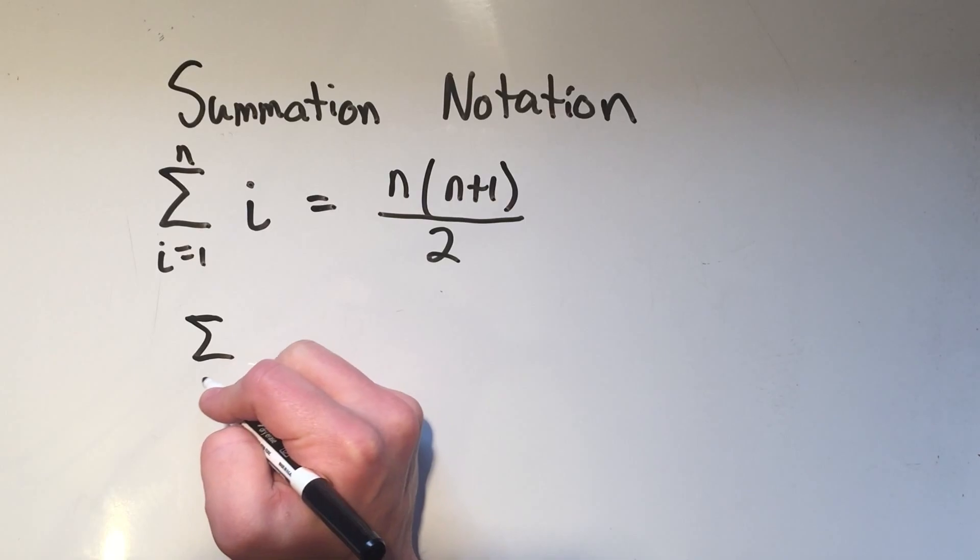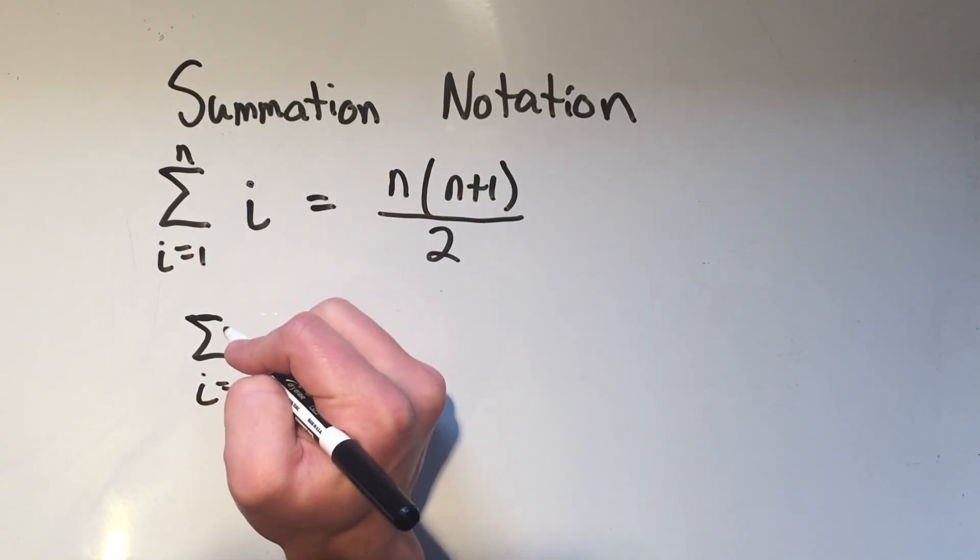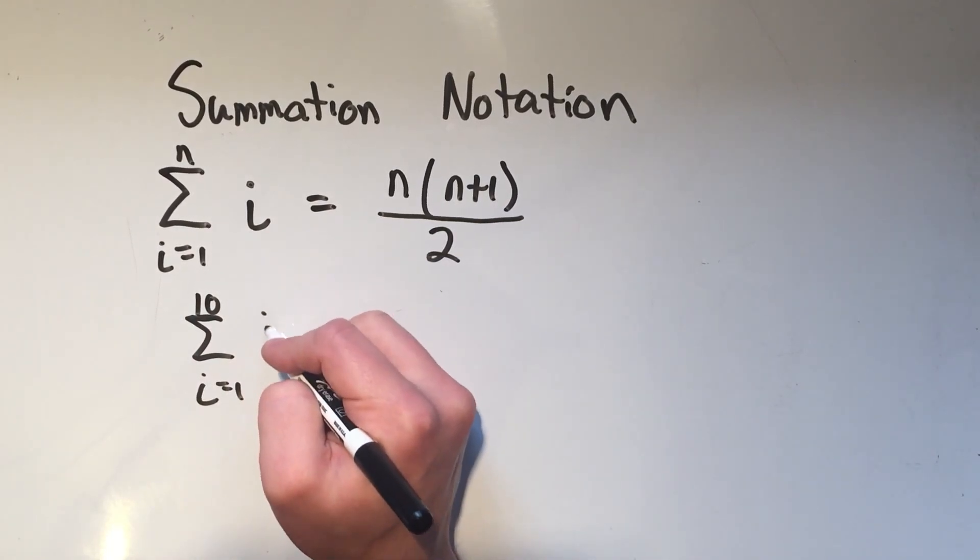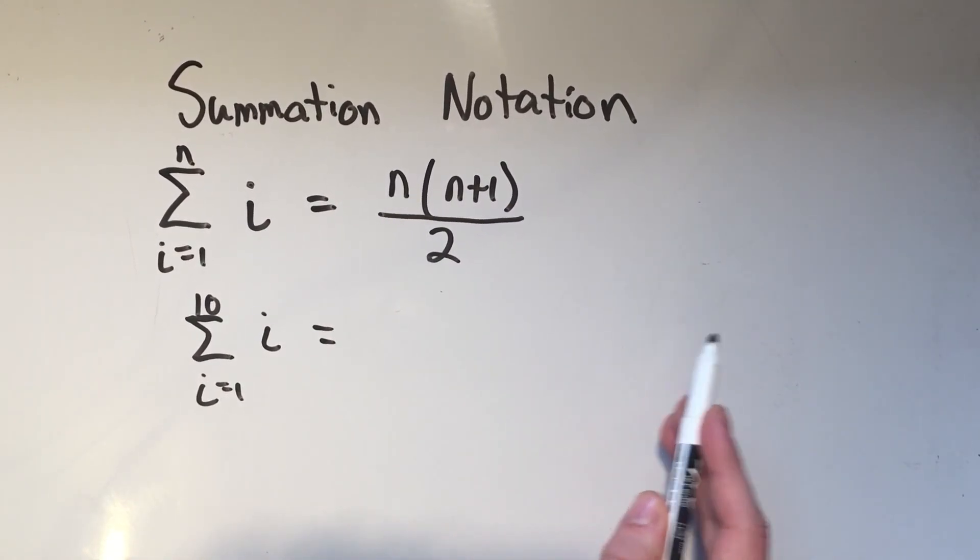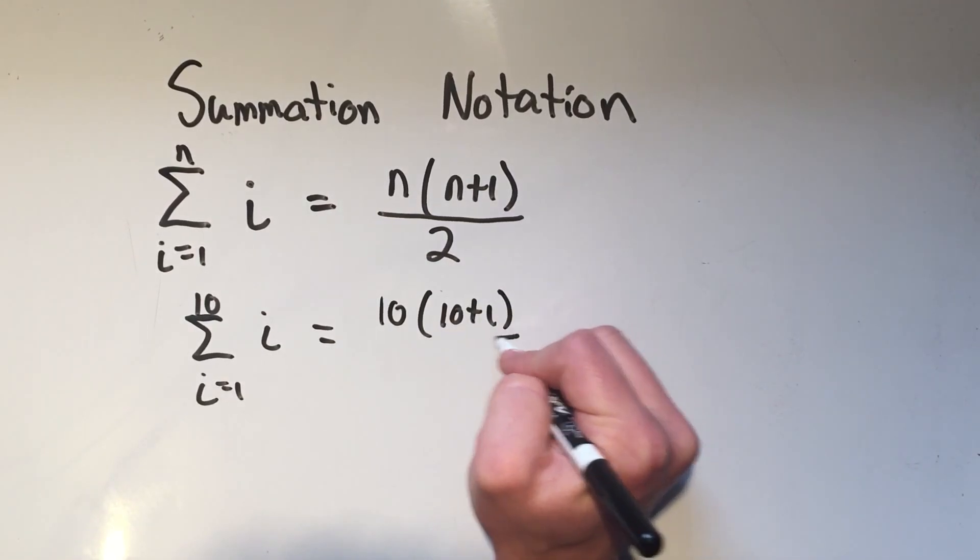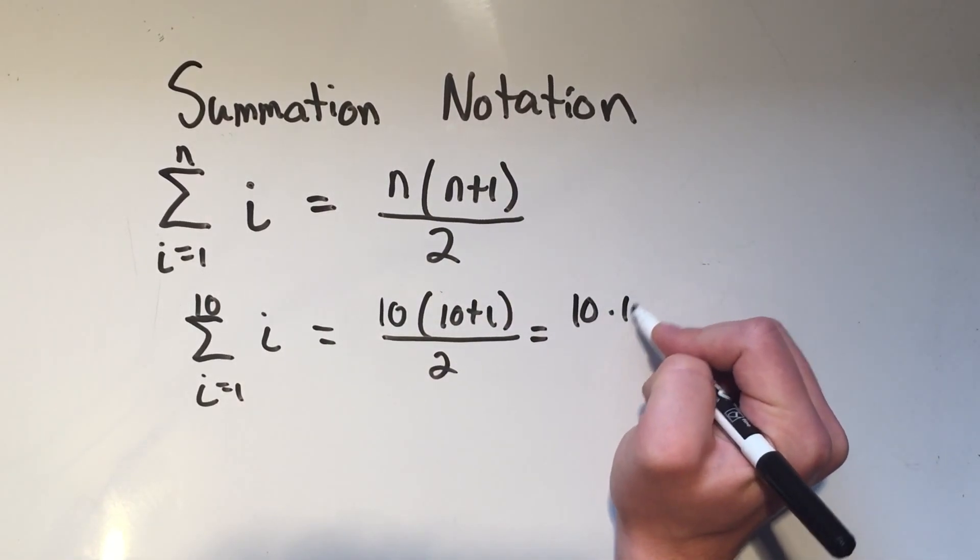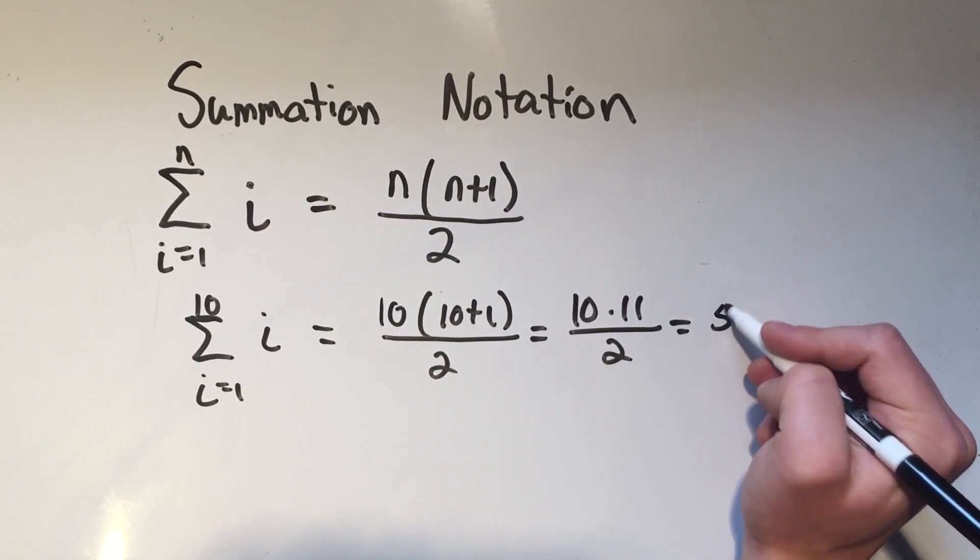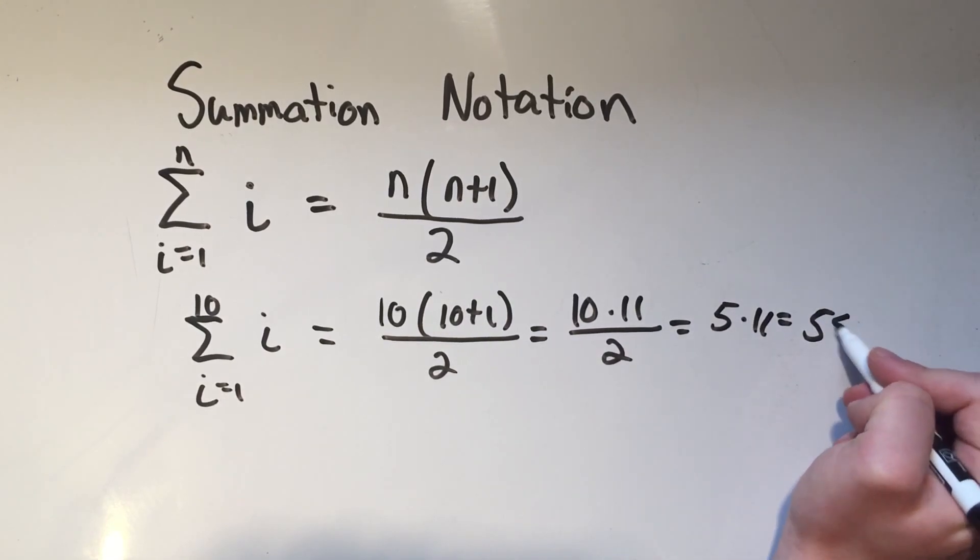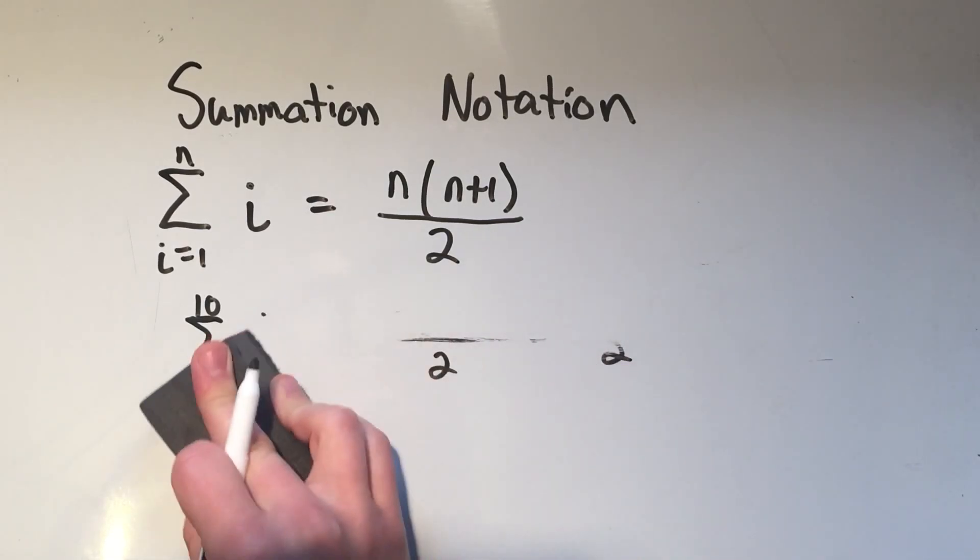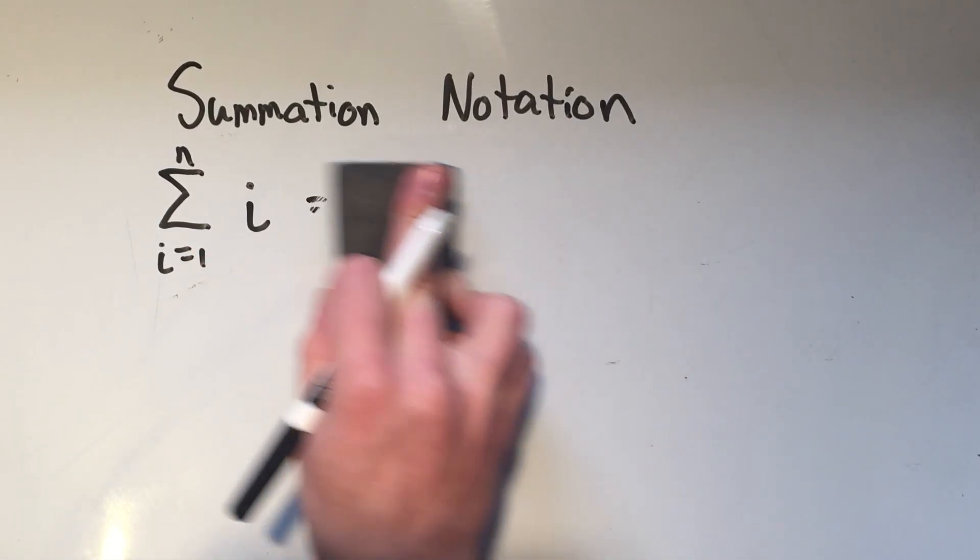Sometimes you'll use this when you're computing definite integrals using the definition of the definite integral. So, for example, if I had the sum of i equals 1 to 10, I could do 1 plus 2 plus 3 plus 4 plus 5 plus 6 all the way up to 10, but why not just use this formula? That's 10 times 10 plus 1 over 2. That's 10 times 11 over 2. 10 over 2 is 5 times 11 is 55. So that's a really quick way to do that. And it's a really handy formula, especially when you're doing the definite integrals calculation.